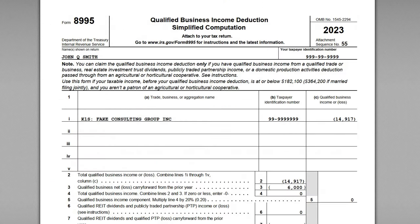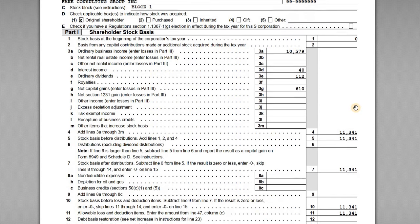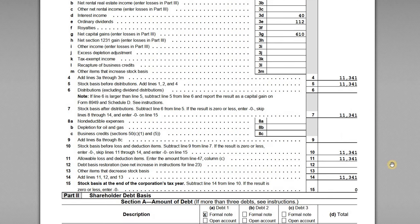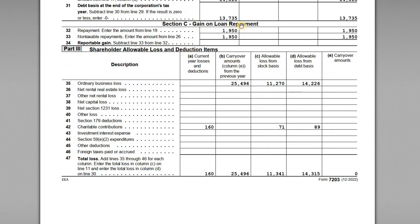Taking a glance at Form 7203, the shareholder basis reconciliation, you can pull these items from the K-1 and how they're reported on the return. The ordinary income allocation, interest, dividends, and capital gains are all increases to his basis, as shown in the form. The allowable loss and deduction items are covered in Part 3, and there are separate tutorials covering that in more detail.